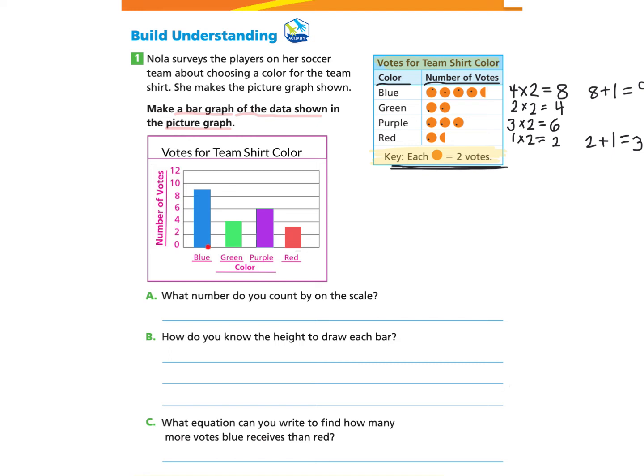And you'll notice that on the blue, I went halfway between eight and ten to represent nine. And for red, I went halfway between two and four to represent three.